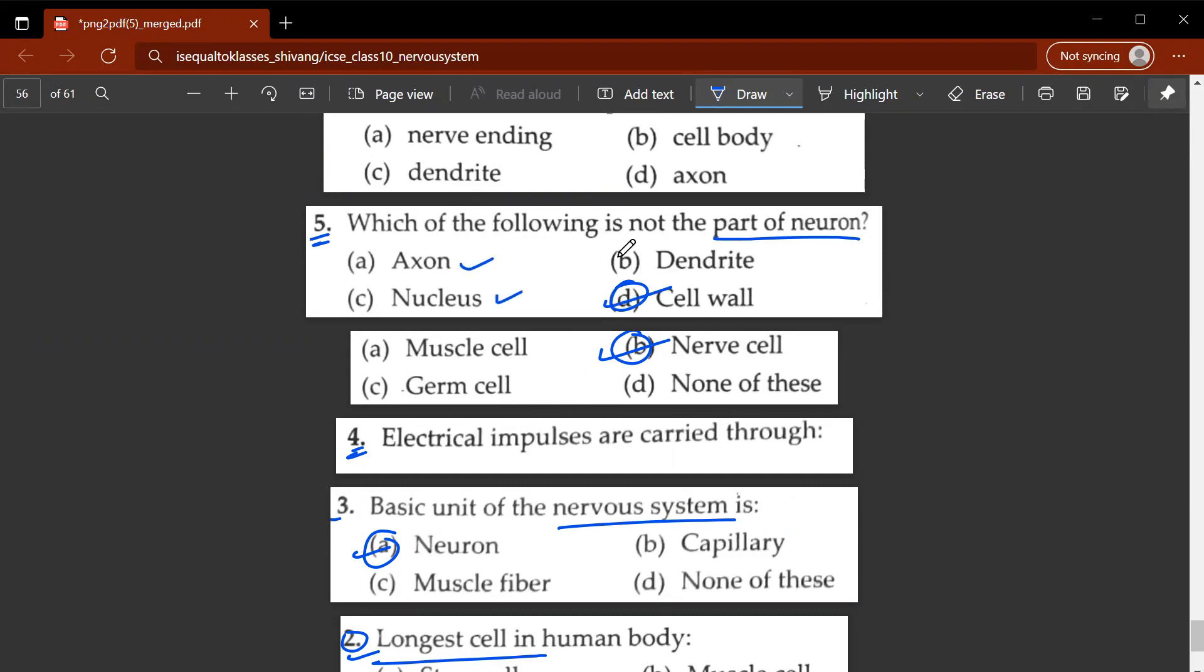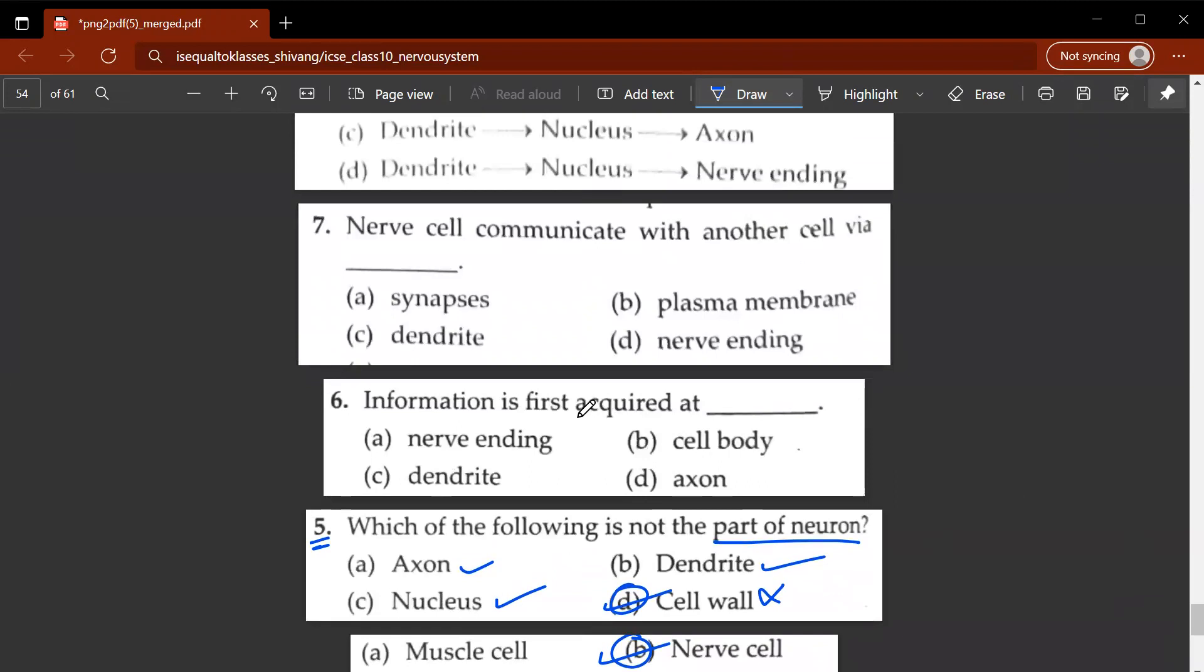So you have the axons, you have the nucleus, you have the dendrites which are part of neurons, which cell wall is not a part of the neuron. Sixth question, information is first acquired at dendrite. Seventh question, nerve cells communicate with one another via what? So via synapses.